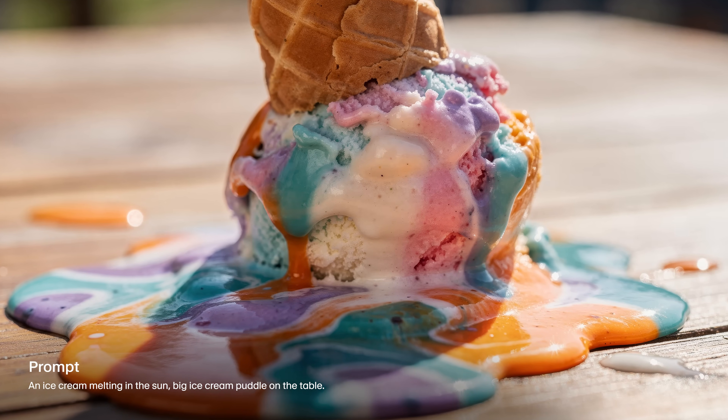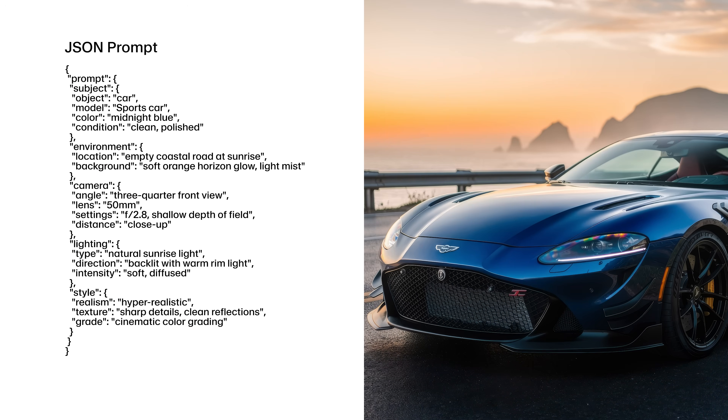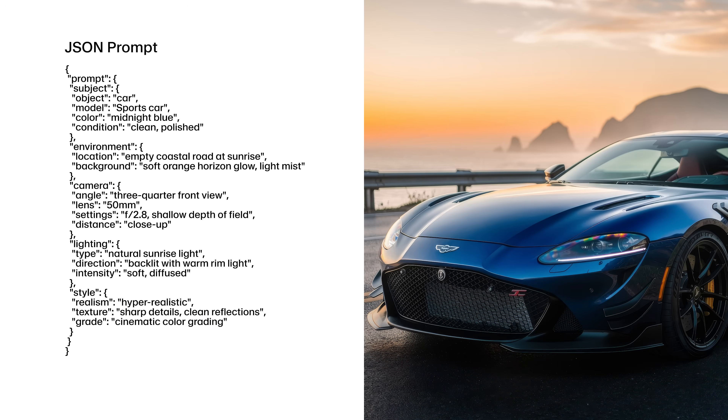If you want precise control over specific details within your images, Flux2 now accepts JSON prompts. You can define parameters like subject, camera angle, and lighting in a code-friendly JSON format. And if you need help putting those prompts together, just ask ChatGPT.